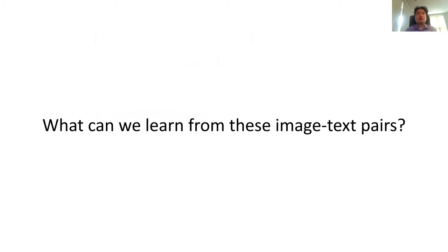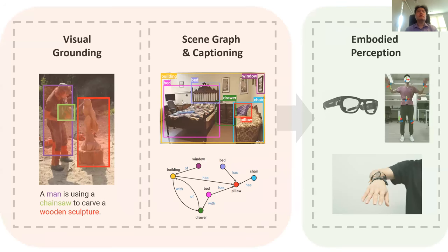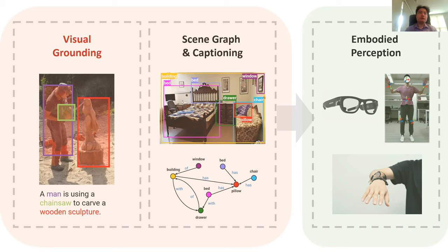For the majority of this talk, we're going to talk about some of the work trying to learn from image and text data. This talk will have two major components. In the first part, we'll talk about how to learn from image and text data. In the second part, we'll slightly switch gears and think about the limitations of just learning from image and text, and look at how we can learn by actively interacting with our world. Let's dive into some of the technical details. The first part will be about visual grounding.